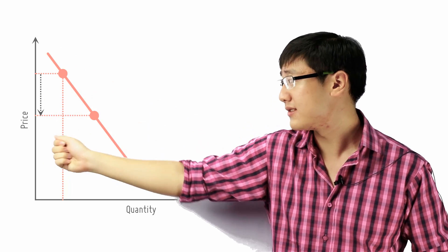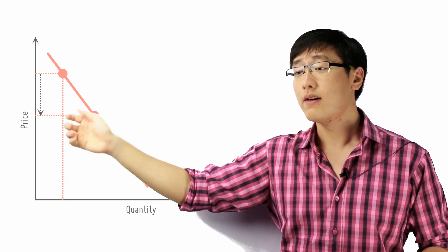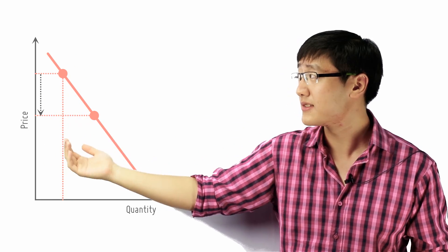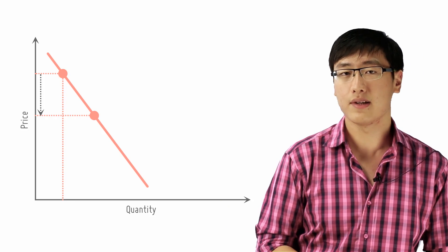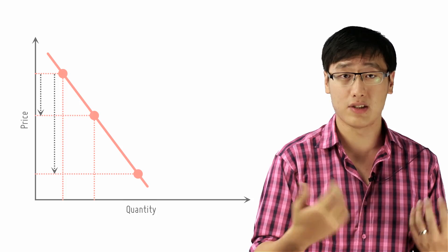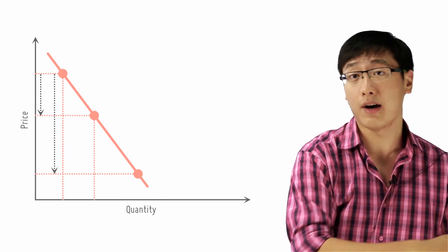When you change your price, the quantity changes as well according to how much you change your price. And that makes the price, in technical terms, your independent variable and the quantity your dependent variable. But let's ignore that for now.